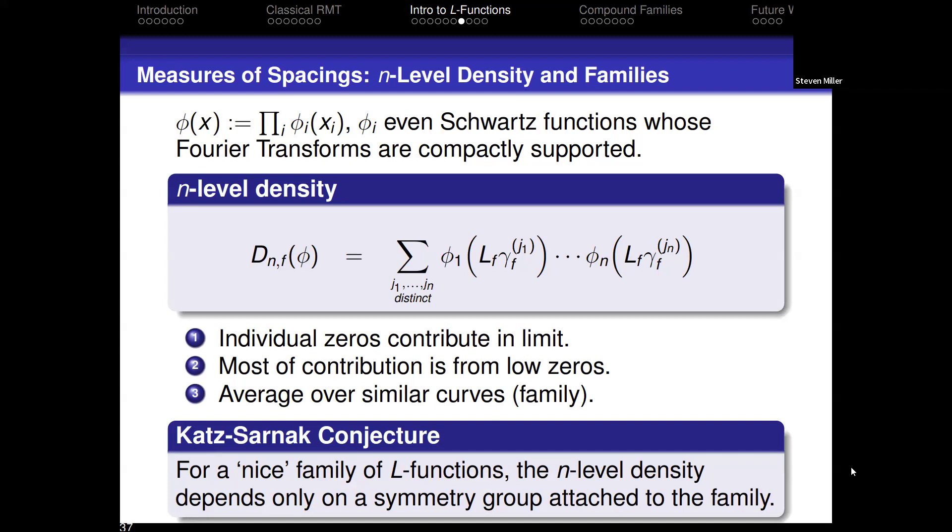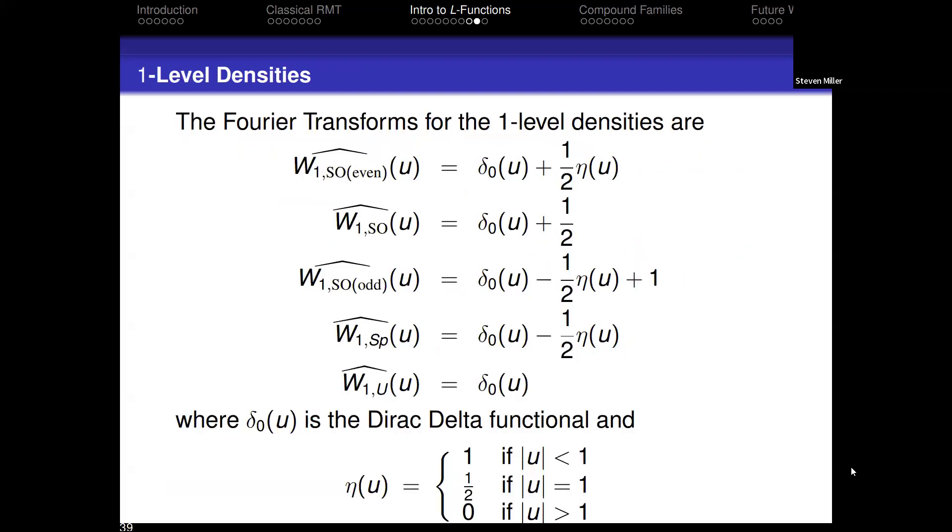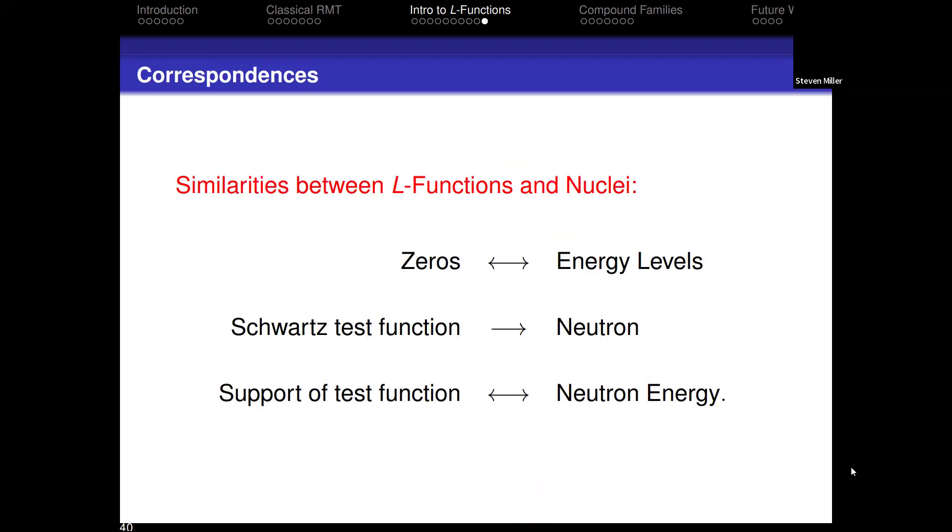The Katz-Sarnak conjecture says that when you do this average, the behavior of the zeros near the central point looks like the behavior of the eigenvalues of matrices associated to a classical compact group. Explicitly, if I do these calculations, if I do the sums over the weighted zeros, it's like integrating my test function against some function that depends only on a symmetry attached to the family. The question is, what is that symmetry? Do different families of L-functions have different symmetries? Yes. Unlike looking high up where you only see one behavior, we see different behaviors near the central point. If I have two different families of L-functions and combine them, what does that do to the symmetry of the combination? You can write everything down explicitly. This is a little bit misleading because I'm doing just the one-level calculation. It gets much worse as you go higher and higher up. It's an interesting study to try to figure out how can you write this in such a way that you can actually do the calculations.